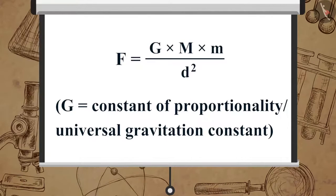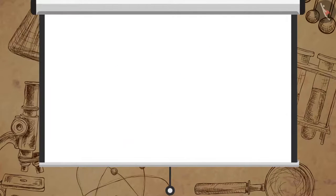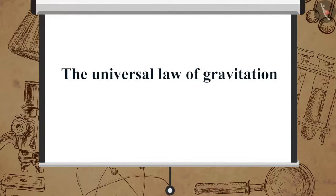Or F is equal to G multiplied by M multiplied by m upon d square, where G is the constant of proportionality or universal gravitation constant. So here we can sum up the universal law of gravitation as F is equal to G multiplied by M multiplied by m upon d square.